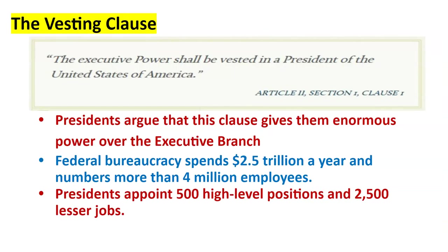Article 2, Section 1, Clause 1 — the Vesting Clause of the Constitution — is where the president gets his power: 'The executive power shall be vested in a President of the United States.' This isn't a king; this is POTUS — president of the United States. Presidents use this vesting clause to do, in many cases, whatever they want. We've seen that with impeachments of Clinton, Andrew Johnson, and Trump. But they are limited by checks and balances: the president can enforce the law, but cannot make the law — that is Congress's job.